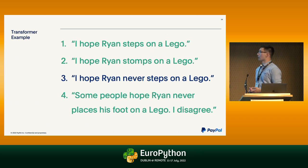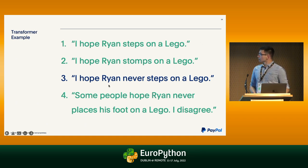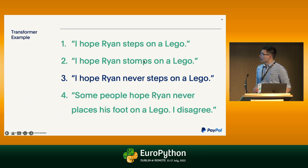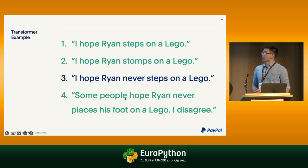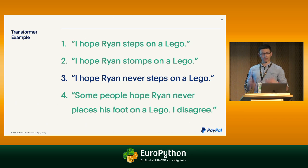Looking at how a well-trained transformer might do on those same four example texts: example one, which the keyword-based model already got right, the transformer would probably get as well. Example two, which the keyword model missed, the transformer would probably get because it would know that 'steps' and 'stomps' are more or less synonyms. And for examples three and four, the big draw is contextual understanding — it would get that 'never' negates 'steps on a Lego,' and it would handle the double negative in the fourth example. This is unscientific, but it illustrates some of the advantages of using a transformer.